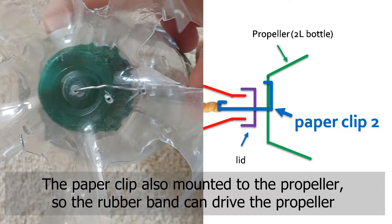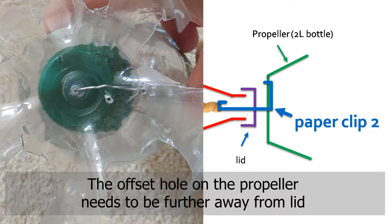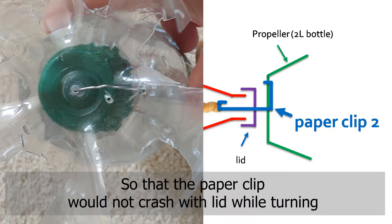The paper clip is also mounted to the propeller, so the rubber band can drive the propeller. The offset hole on the propeller needs to be further away from the lid, so that the paper clip would not crash with the lid while turning.